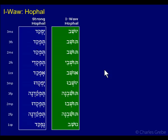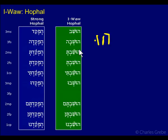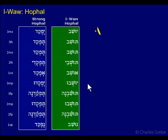And then for the imperfect, we have yofqad and yushav, tofqad and tushav. So again, the U is carrying all the way through. With the imperfect, you have a number of different prefixes: the yod, the tav, the aleph, and the nun. With the perfect, we had the hithel he — right here. The imperfect has the prefixes we expect with the imperfect.